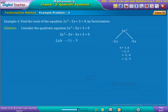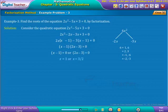Now, apply the Zero Product Rule. Obtain the values of x. We obtain x is equal to 1, x equal to 3 by 2.